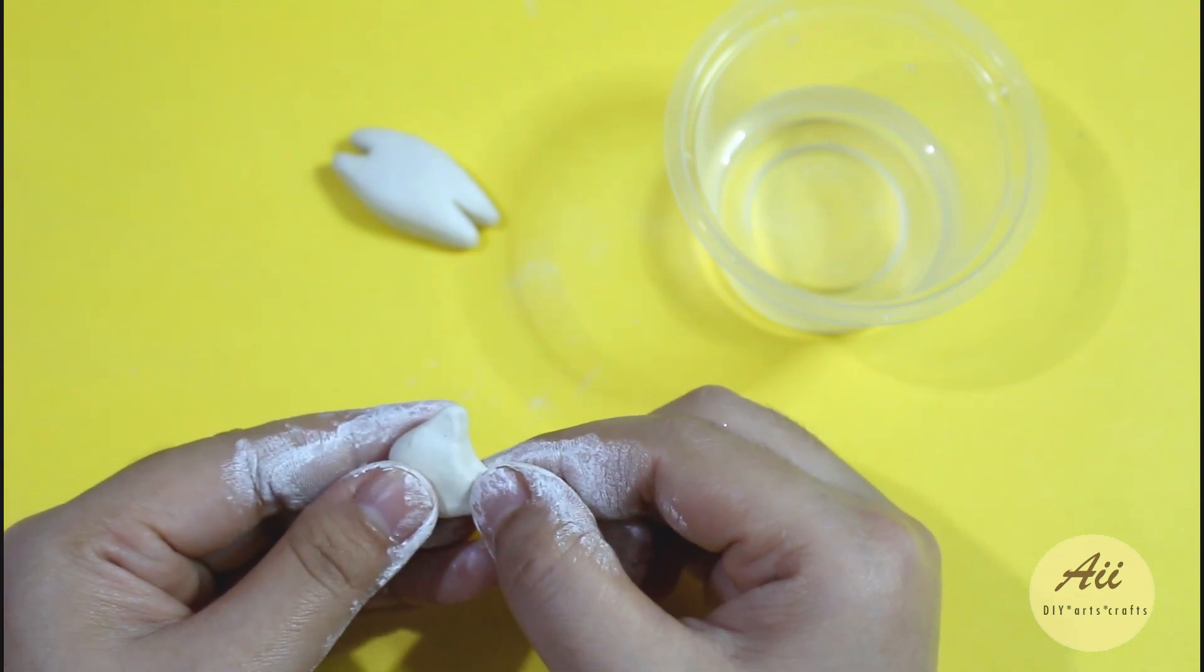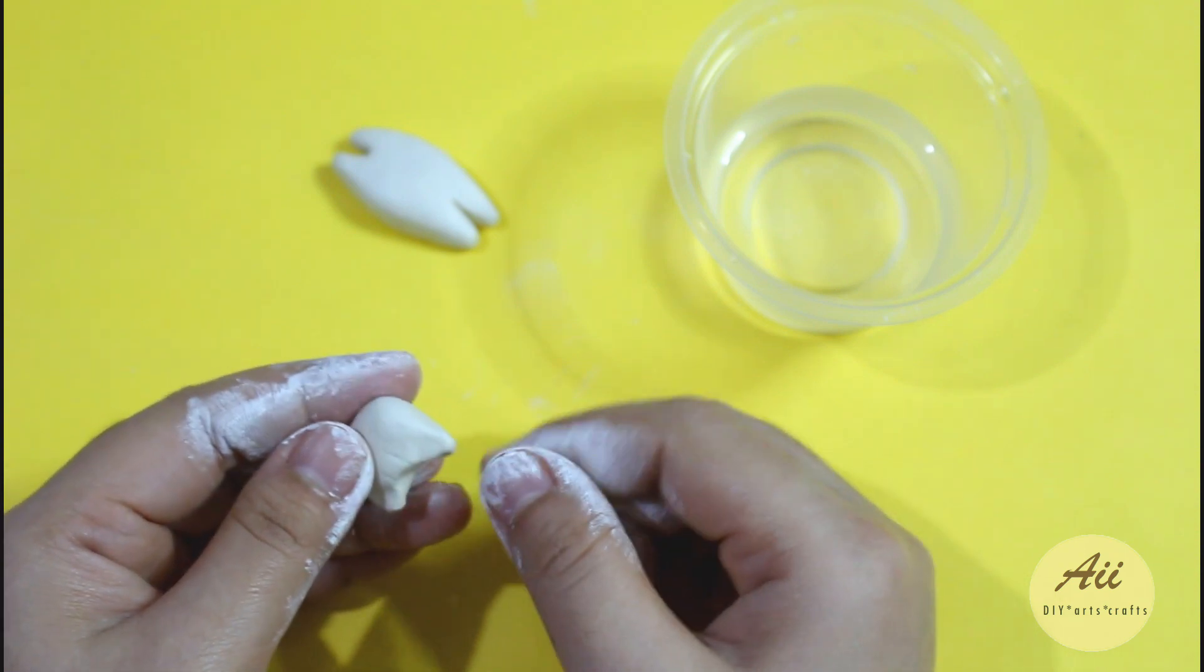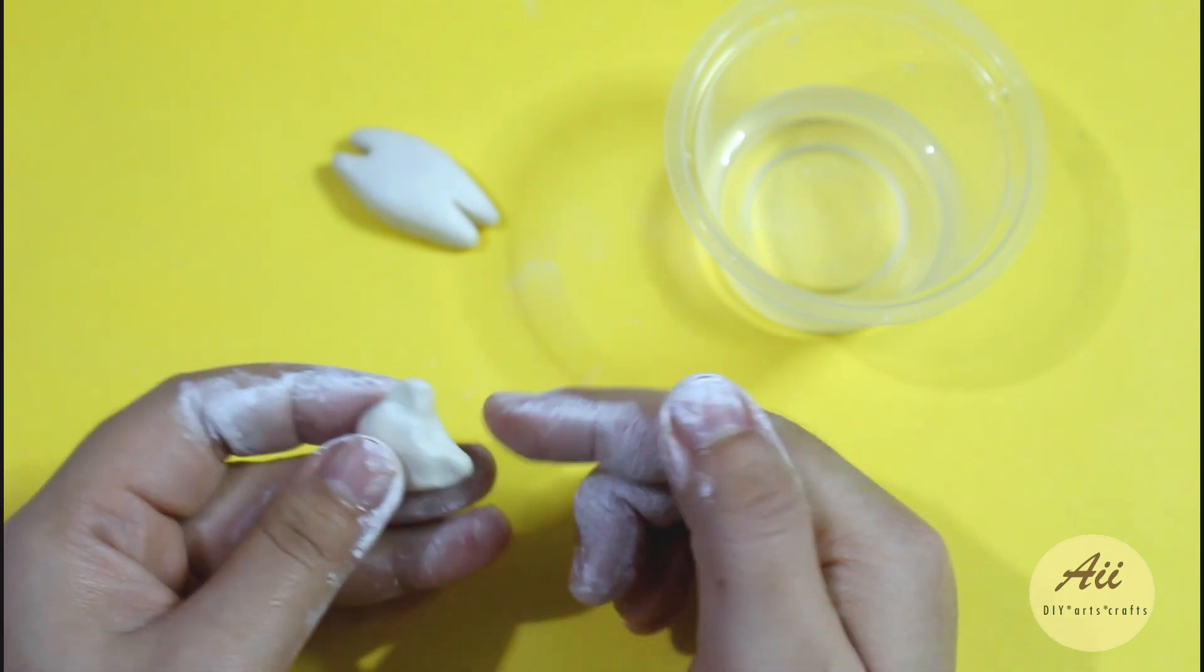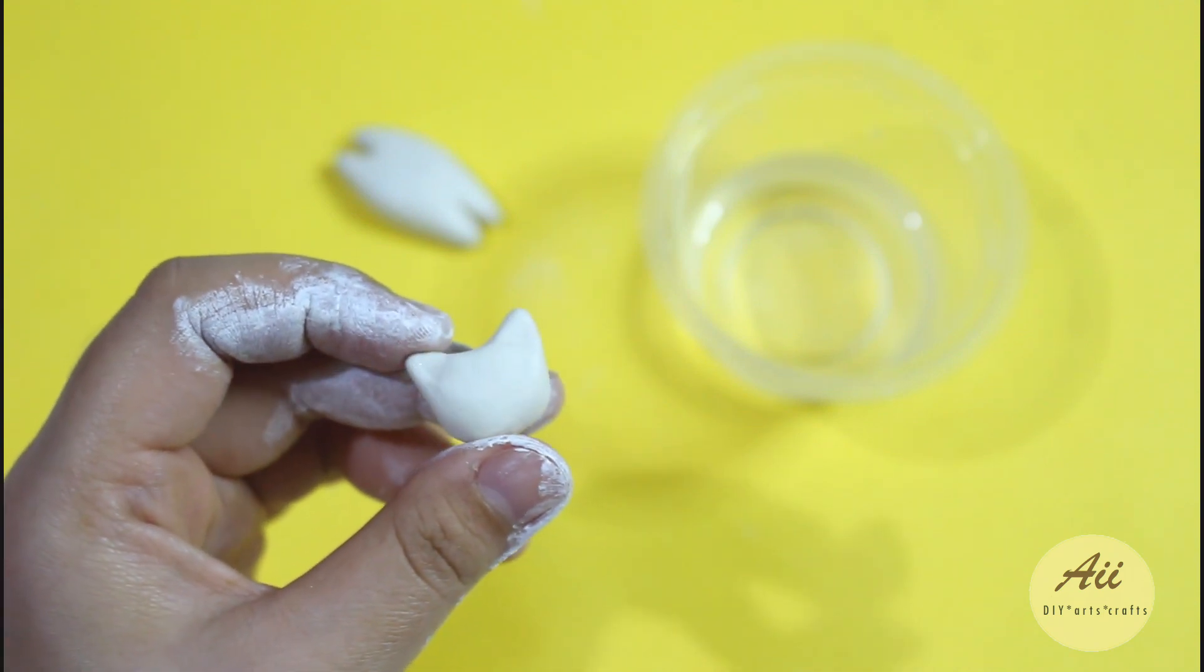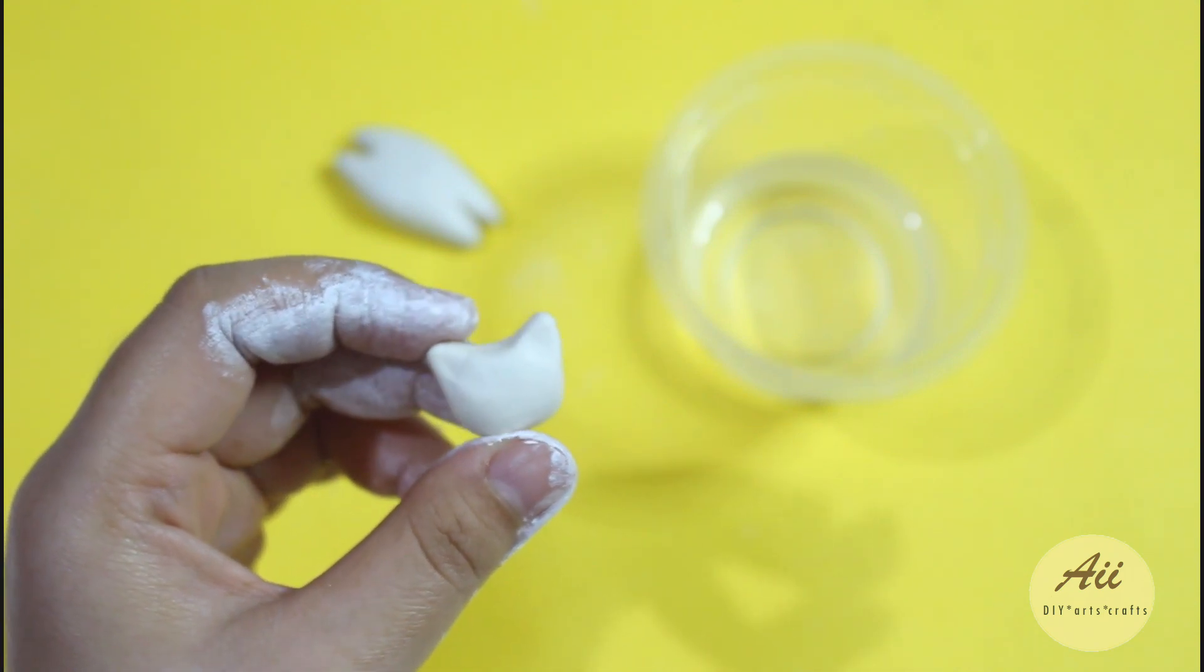For this part press down on the cat ears to create an indent like so. This is to create a dimension for the cat's head so it isn't flat looking, giving a more three-dimensional look.